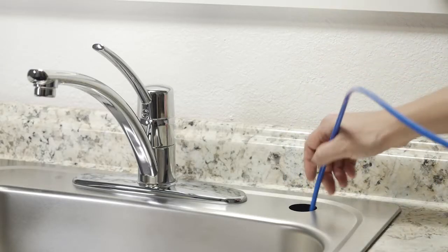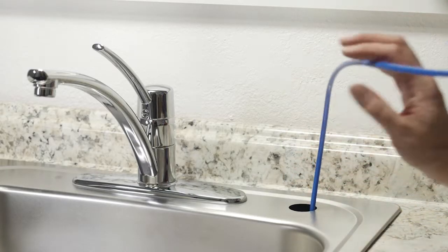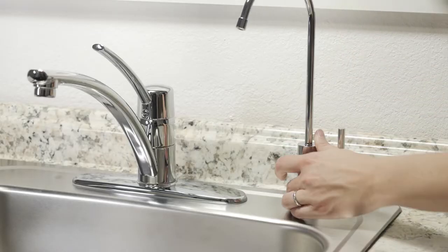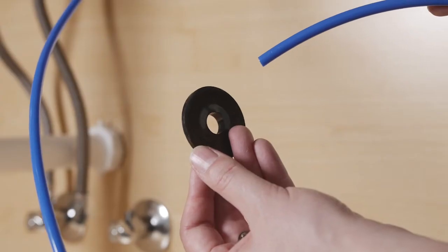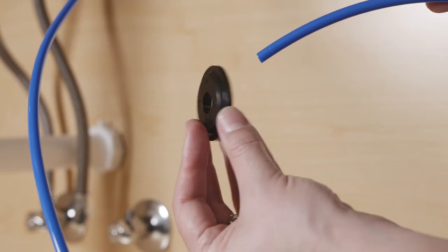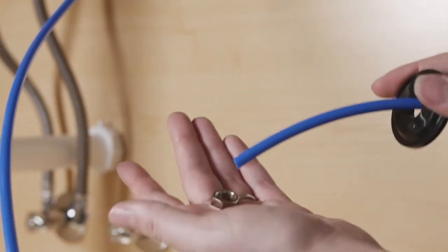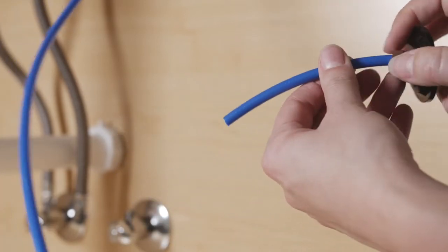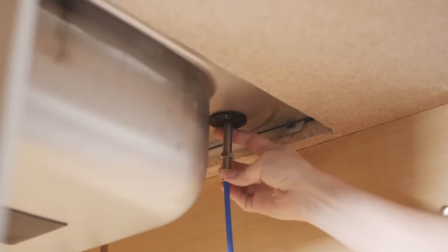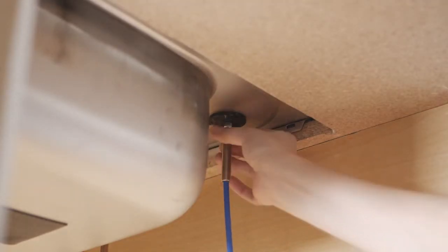Feed the blue tubing through the sink or countertop hole to the cabinet below. From under the counter, thread the large plastic washer flat side up, lock washer, and locking nut up the blue tube to the countertop. Tighten the locking nut until the faucet assembly is firmly in place.